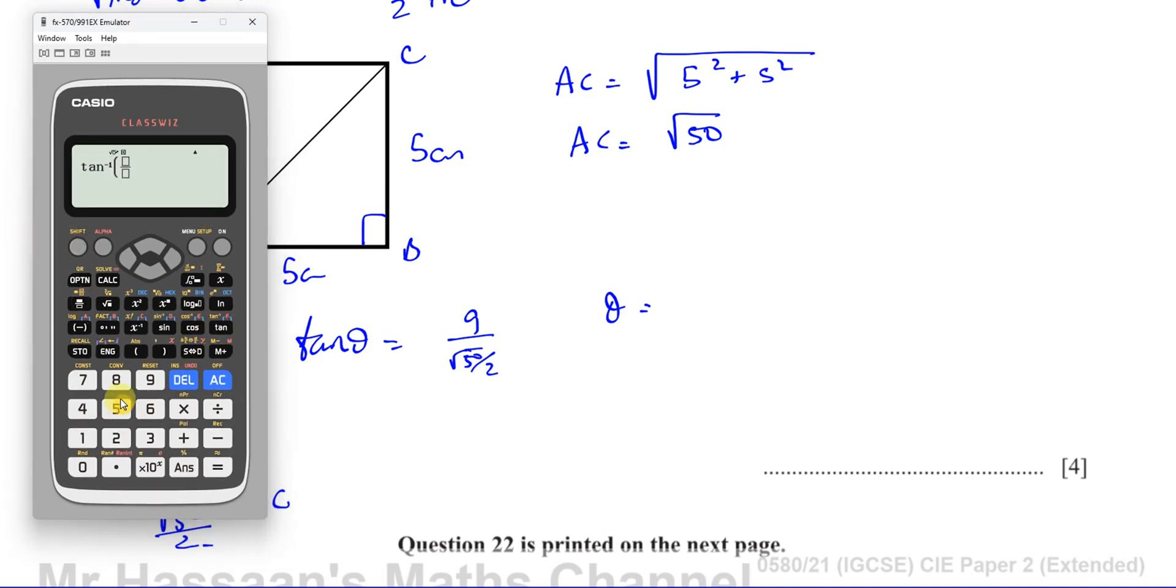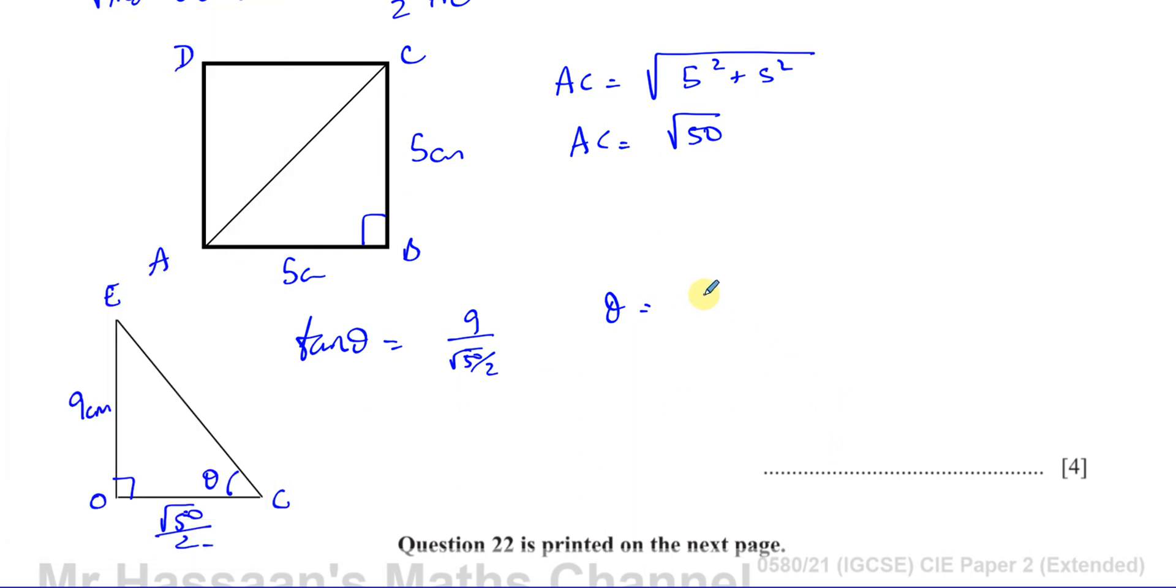So you have inverse tan. Then we have 9 over root 50, and that's divided by 2. Whoops, why did I have a square root? I have to get rid of the square root there. Divided by 2. And that will give us our answer. That gives you 68.553.